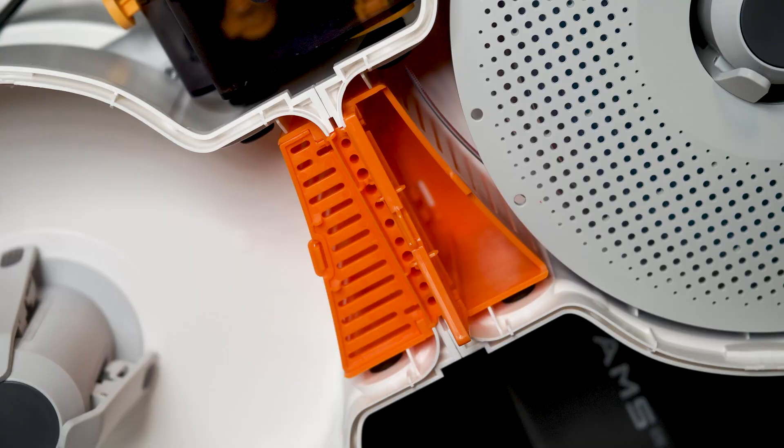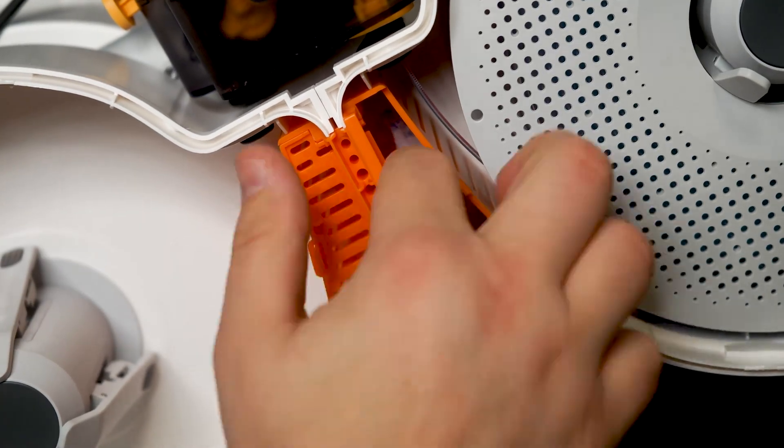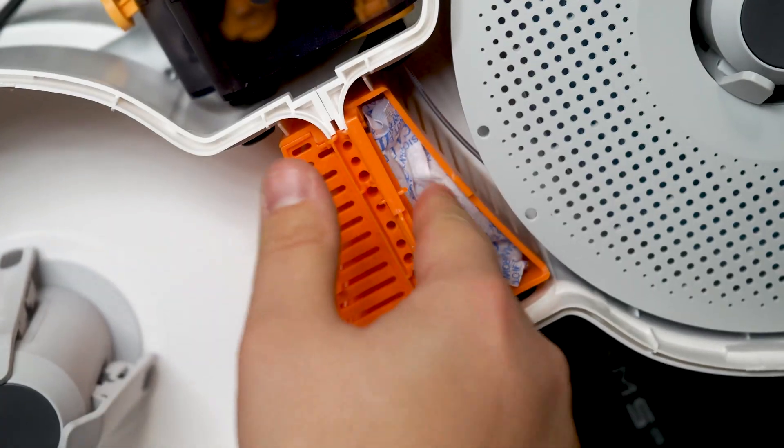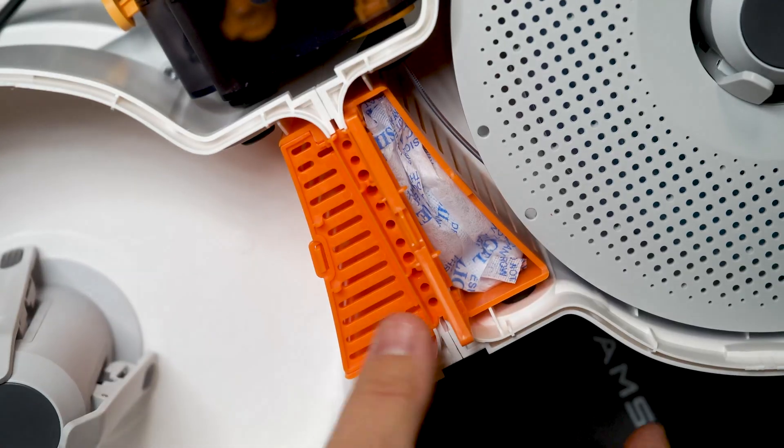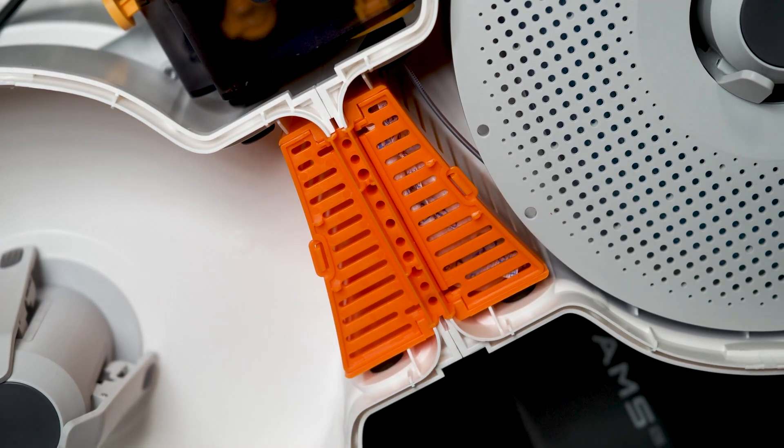For step number five we're going to install desiccant bags inside the drying box. I was able to fit two bags in each compartment. Please note that the desiccant is a consumable, which means that eventually you'll need to replace them.